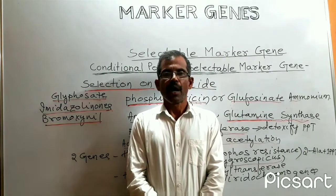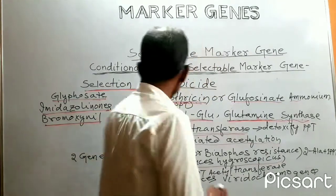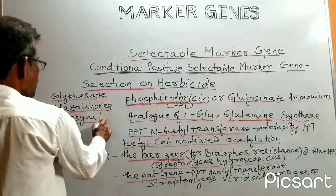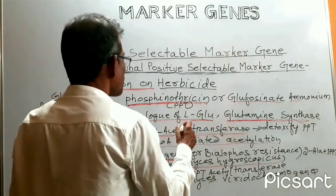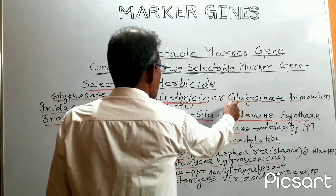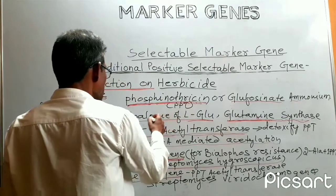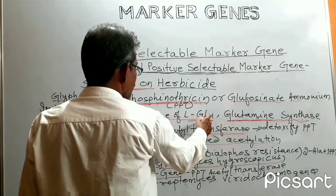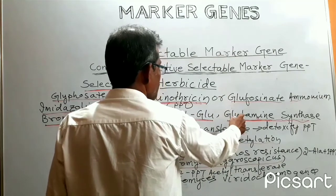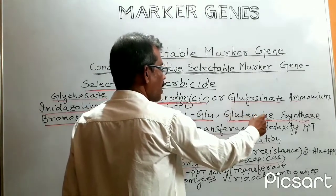Now we shall discuss how transgenic plants are selected using herbicide as the selective agent. Various herbicides like phosphinothricin, glyphosate, imidazolinones, and bromoxynil can be used as selective agents for selection of transgenic plants. Phosphinothricin or glufosinate ammonium is an active component of several commercial herbicides and is an analog of L-glutamic acid. Because of this, phosphinothricin competitively inhibits the enzyme glutamine synthase, which is responsible for assimilation of ammonium ions in plant tissue.